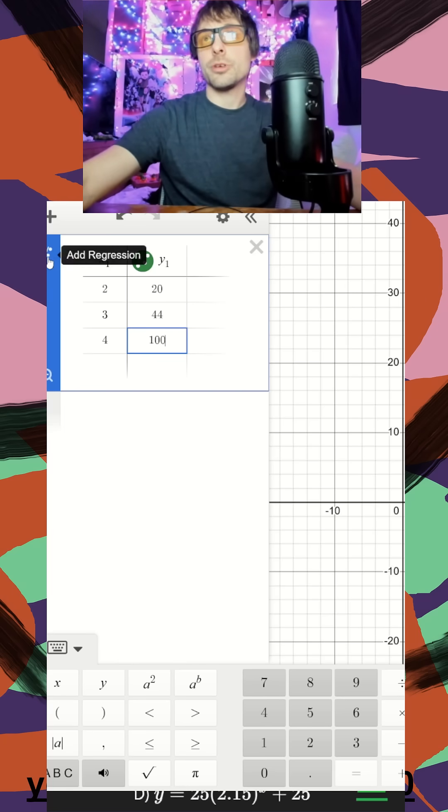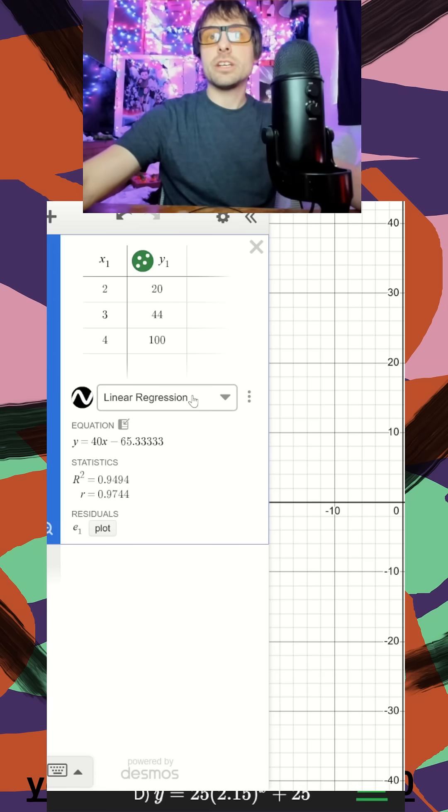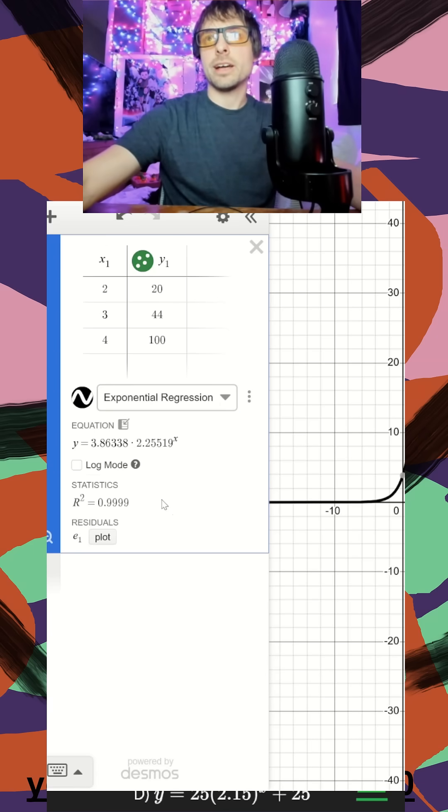Then I'm going to graph and add regression here. We figured out it was exponential, so we can use exponential regression. And here's our graph.